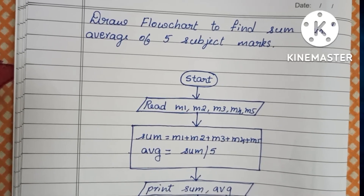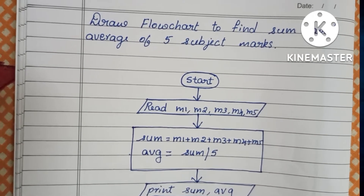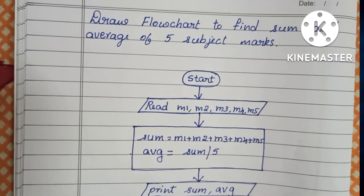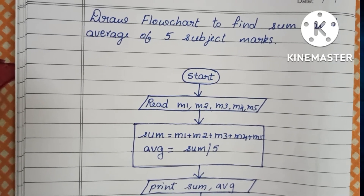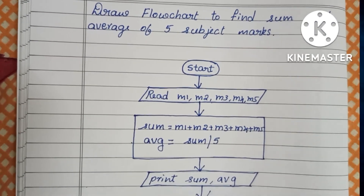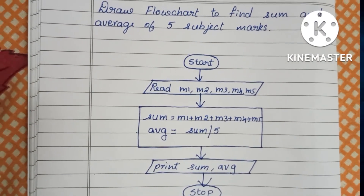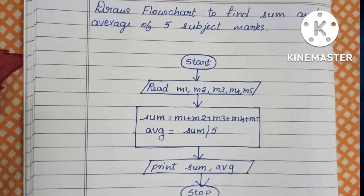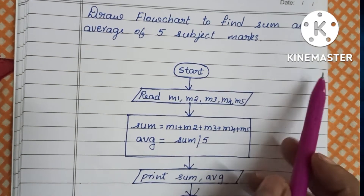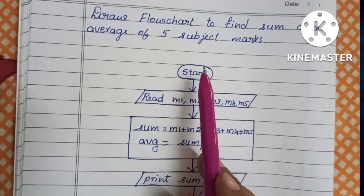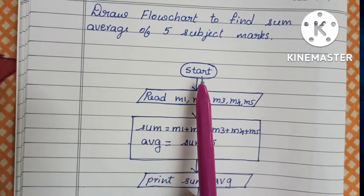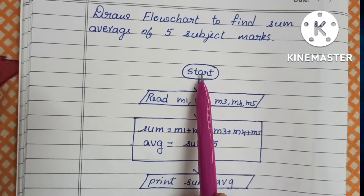Next we stop the flowchart. We stop using an oval shape, within which we write the stop statement. This is the flowchart to find the sum and average of five subject marks.